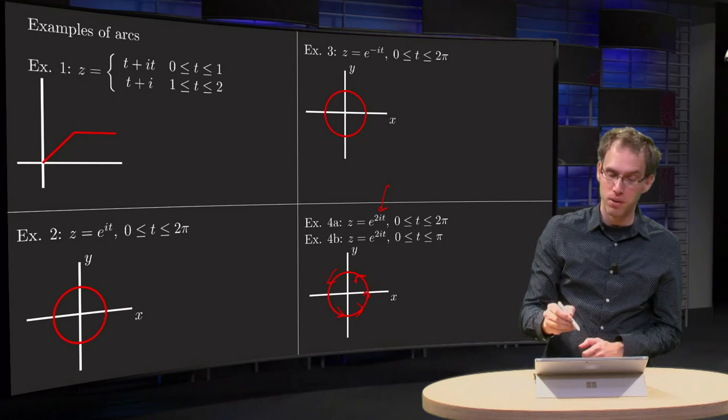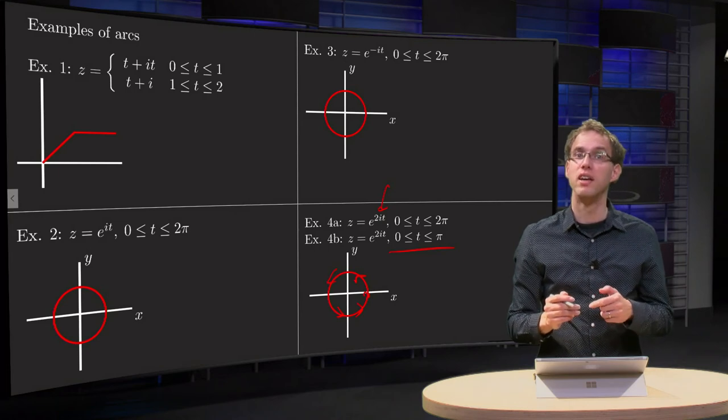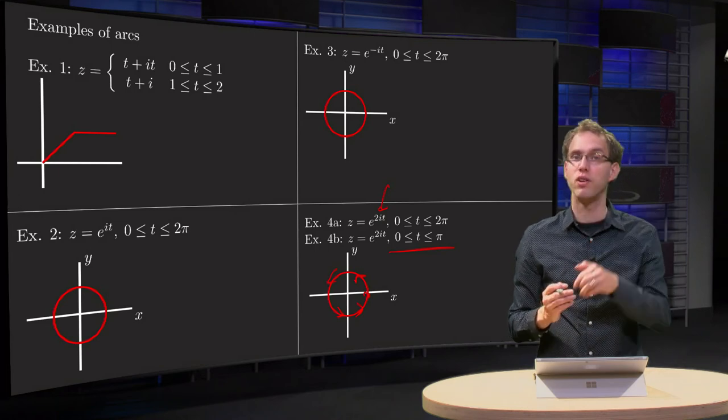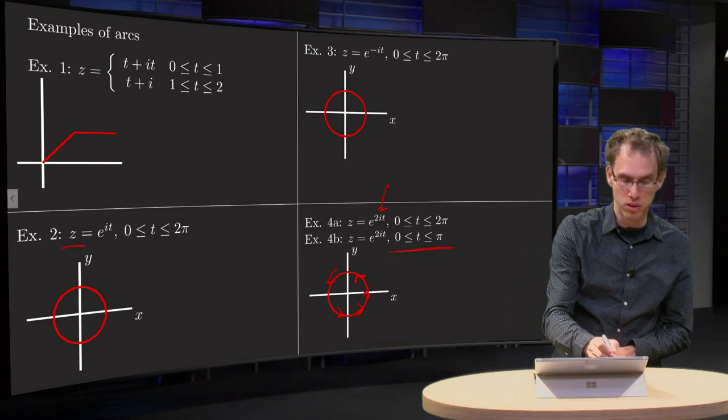We can fix that by letting t run of course between 0 and π. Then we are again running counterclockwise once around the circle, at twice the speed with respect to this one.